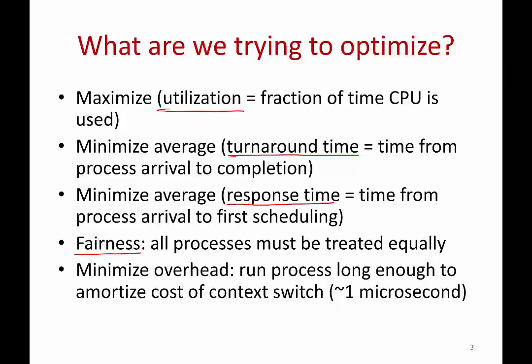A scheduler should also try to minimize overhead. Every time you context switch — go from one process to another — you incur a certain overhead. On modern systems, switching between processes takes around a microsecond or less, because of all the context switch mechanism. You don't want to switch processes too much. You want to amortize the cost of the context switch by running the process you've switched to for a long enough period of time.